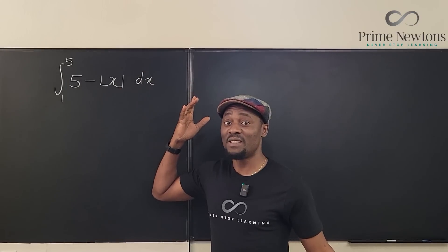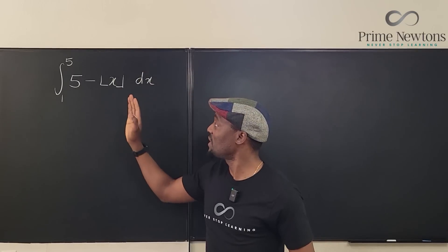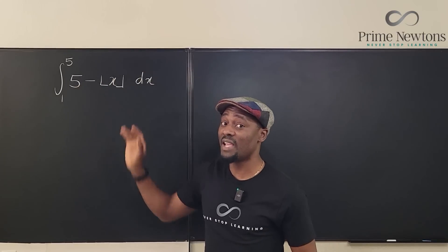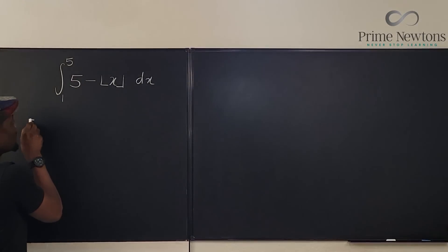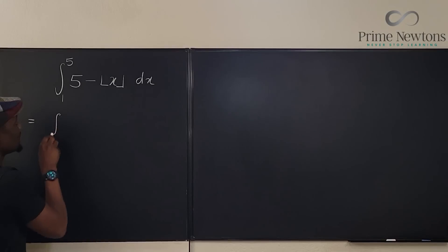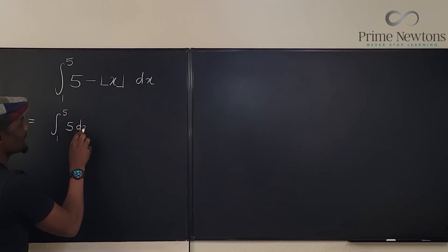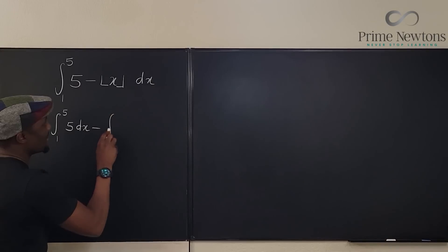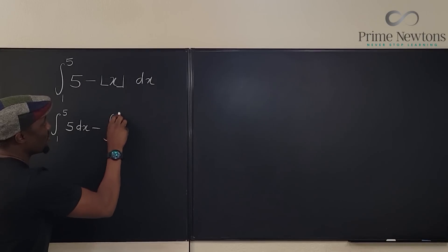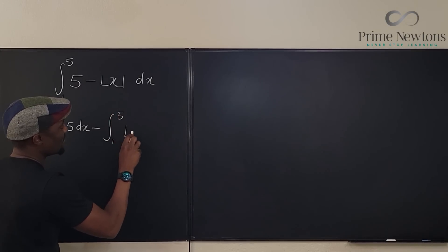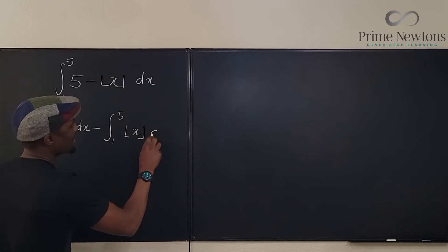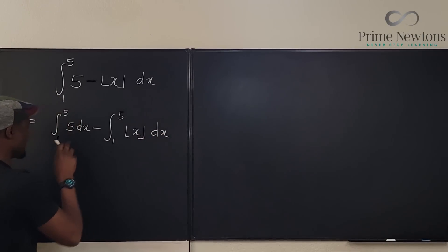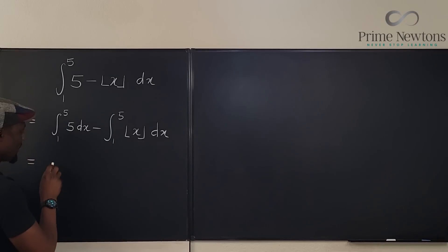Let me show you what you're supposed to do if you see this. All you have to do is separate the integrals. This is equal to the integral from 1 to 5 of 5 dx, minus the integral from 1 to 5 of the floor function of x dx.